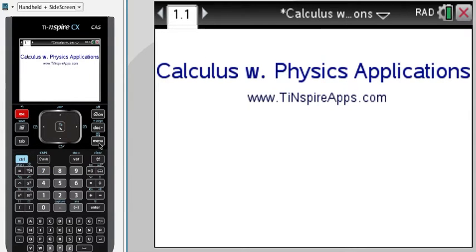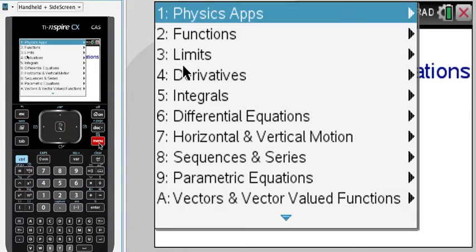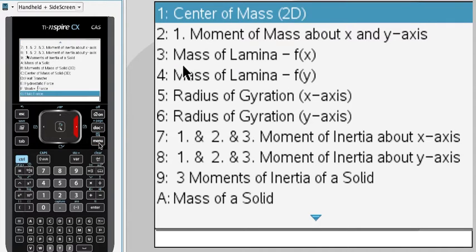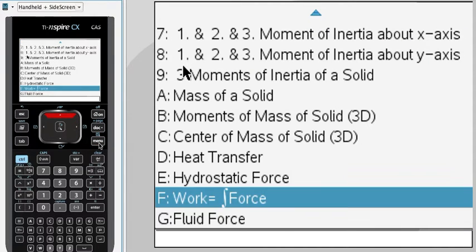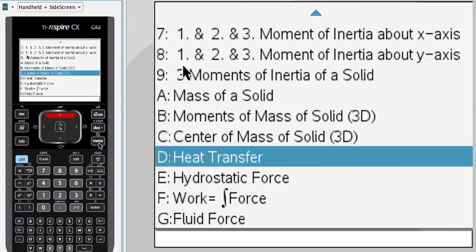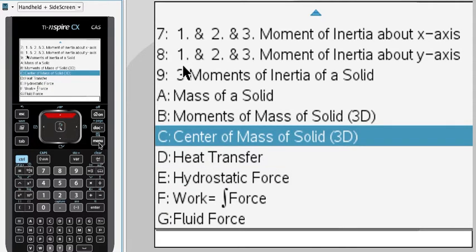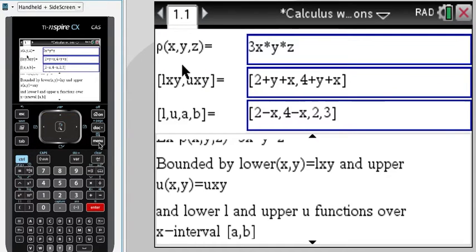Let's do maybe one or two more. If you have any questions, don't hesitate emailing us. Center of mass of a solid, three dimensions: we enter our density function here in terms of x, y, and z right here, the lower and upper bounds in terms of x and y, lower function, upper function, a and b.